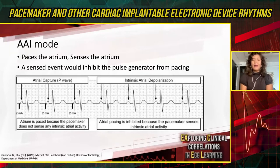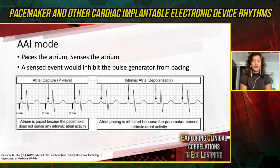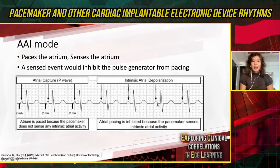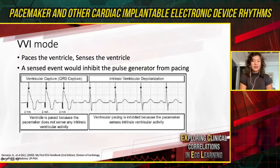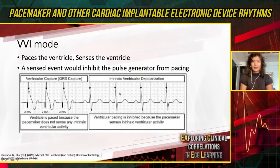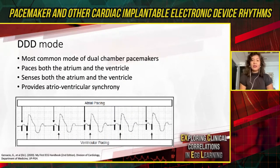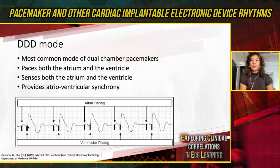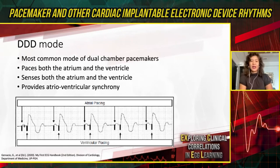In AAI mode, you can see capture in the atrium, and when there is intrinsic atrial activity, pacing is inhibited. In VVI mode, pacing occurs in the ventricles, and once intrinsic ventricular activity is detected, it inhibits itself. In DDD mode, there are several possible tracings. When pacing occurs in both chambers, this is called AV sequential pacing — you can write that as a diagnosis on your ECGs when pacing is going on in both chambers.